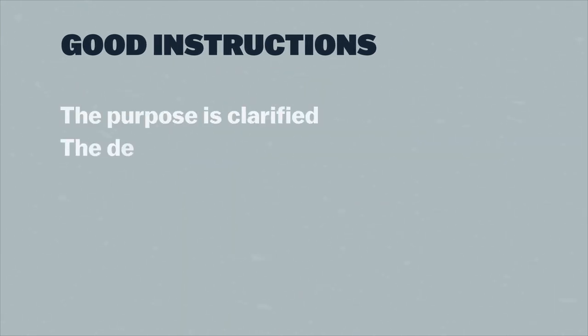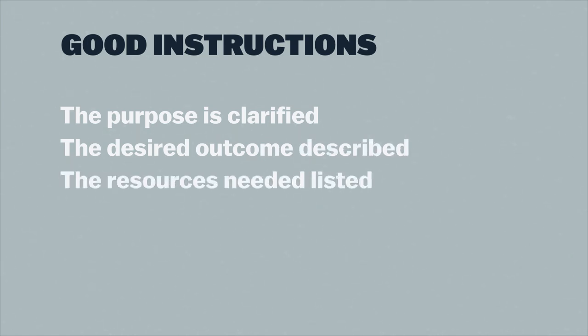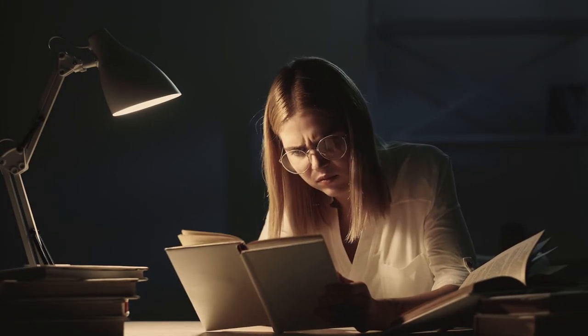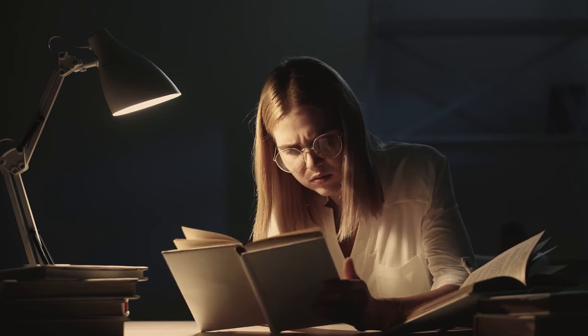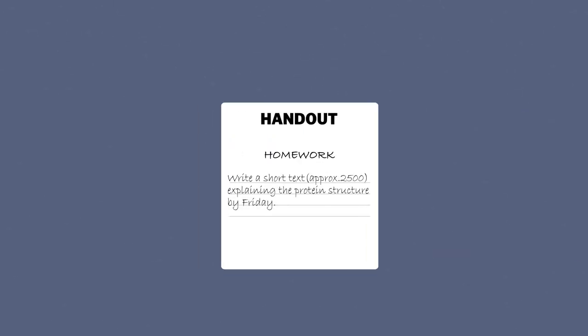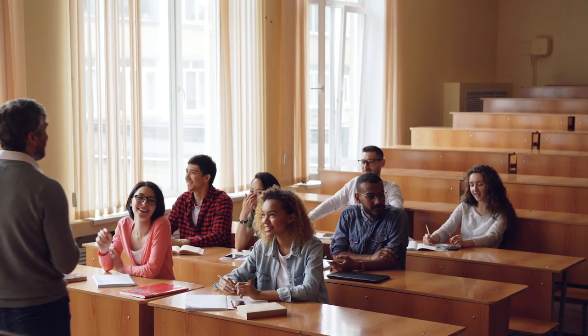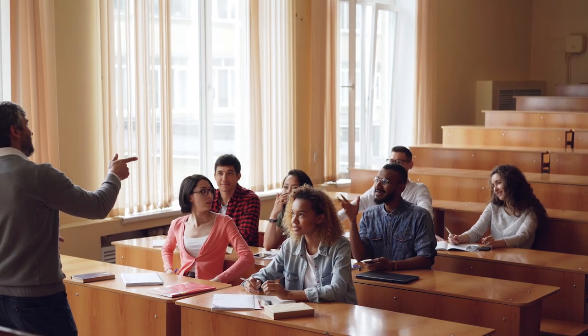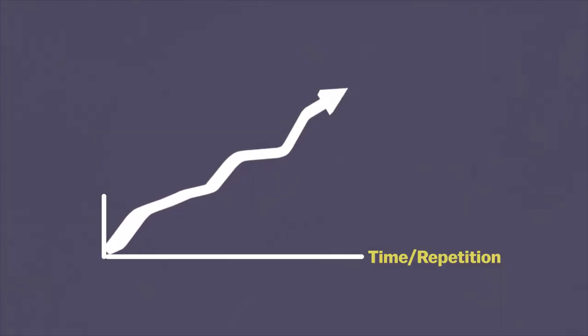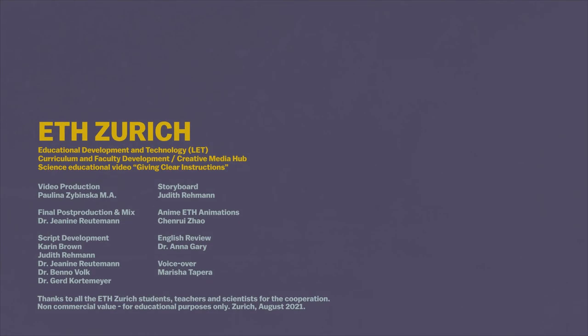Now the purpose is clarified, the desired outcome described, the resources needed listed, the timeframes defined, and the procedure outlined step by step. That is a lot for students to remember — imagine having to memorize a recipe after only reading it once. Students would rather have the cookbook in front of them to refer back to continuously. Display the instructions for all to see: write them on a slide, put them in your online course, or provide a handout. Next time you lead students through a learning activity, create a recipe for them to follow. Practice makes better, and the same is true for giving clear instructions — it is a skill that will improve over time with repetition.